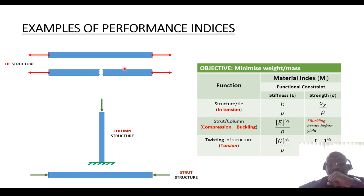So when it comes to structures being subjected to tensile load, this is the material index that you can use. So E over rho, and in terms of its strength counterpart, sigma y, representing the Young's modulus over rho.